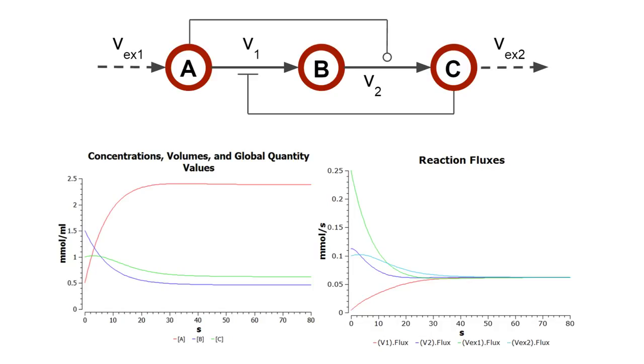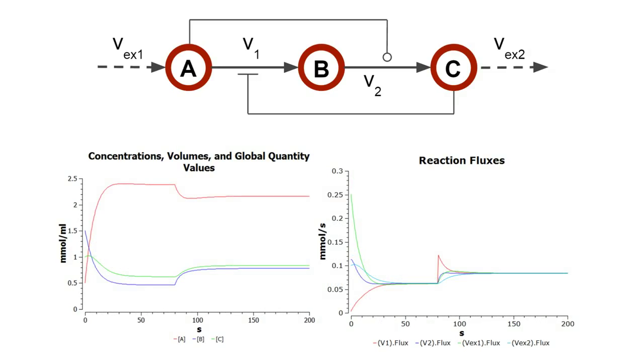Now, the question is, what happens to this steady state if we change the activity of an enzyme, for example, the enzyme catalyzing the first reaction? In general, we expect that the system will adjust to this perturbation, and that a new steady state will be reached. This is what happens in our example, where at time 80 seconds, we changed the activity of the enzyme. In particular, we doubled it.